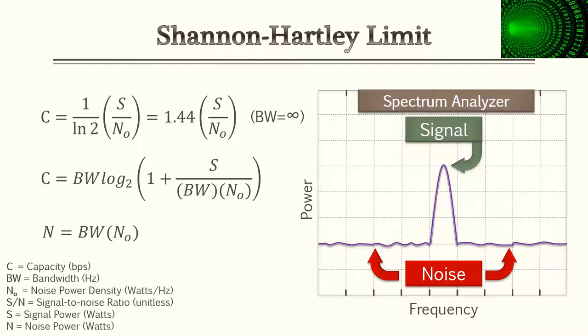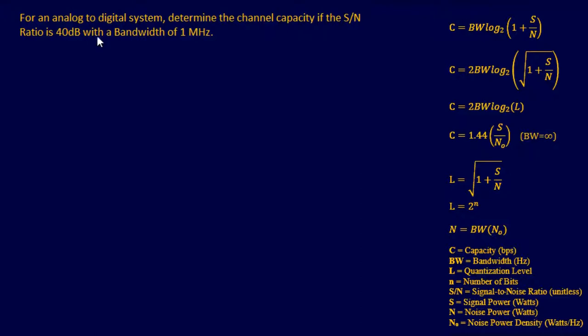There are two things to go over before the practice problems. For the Shannon-Hartley limit, there are two equations you may need. Anytime a problem has a bandwidth approaching infinity — checking white noise over the whole bandwidth spectrum — you'll use the first equation: 1.44 times signal over noise density. Noise density is in watts per hertz. To find noise power, multiply bandwidth times noise density, and the hertz units cancel, leaving watts. You can also use noise density in the standard Shannon-Hartley equation.